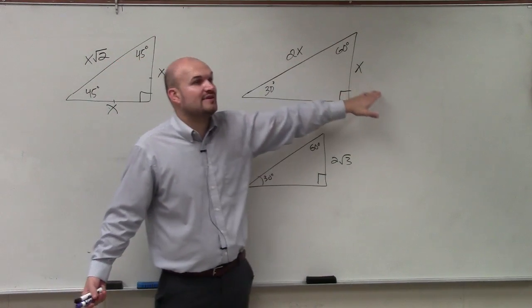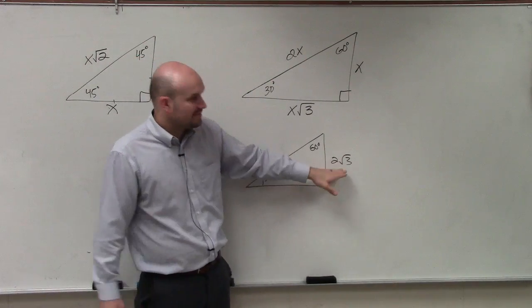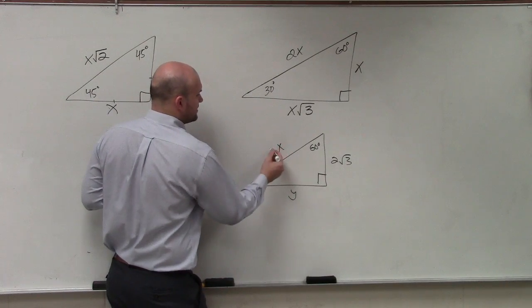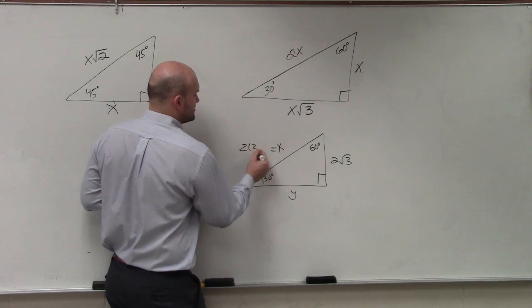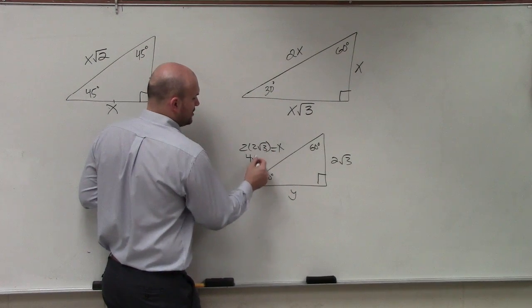What if I was giving you the hypotenuse? Then I wanted to find the short leg. Then I would just divide by 2. But in this case, I'm given the short leg. So to find the long leg, let's call that x and that y. To find the long leg, it's going to be 2 times 2√3. Well, you can only multiply the 2 times 2, so that's 4√3.